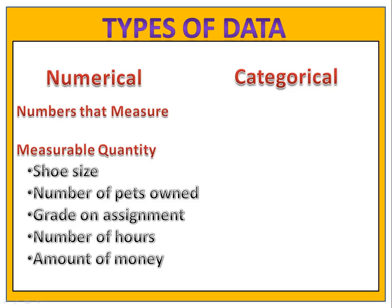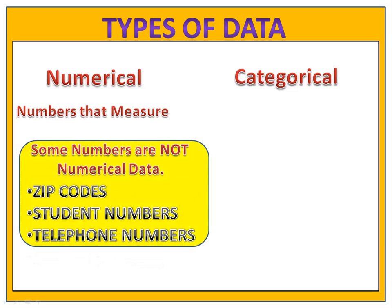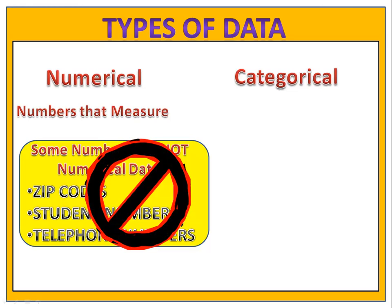Some numbers are not numerical data and we have to be careful. Examples include zip codes, student numbers, and telephone numbers. While they're numbers, they're not numerical data — they're categorical, which we'll speak of in just a moment.